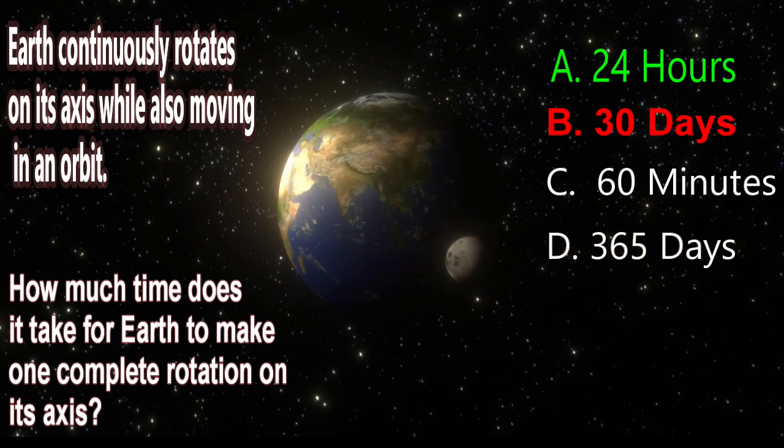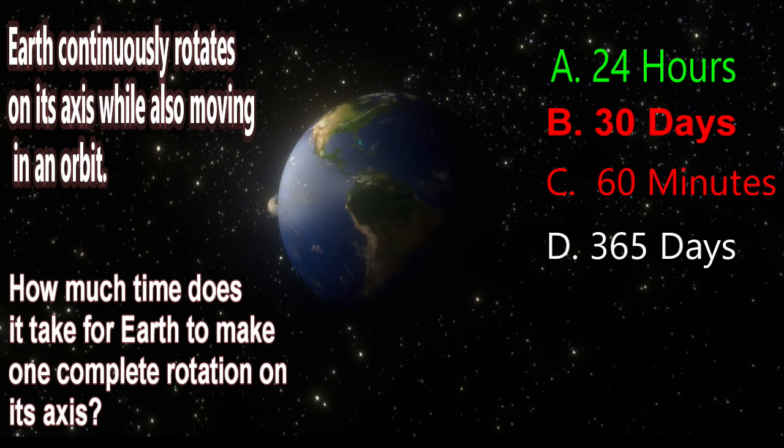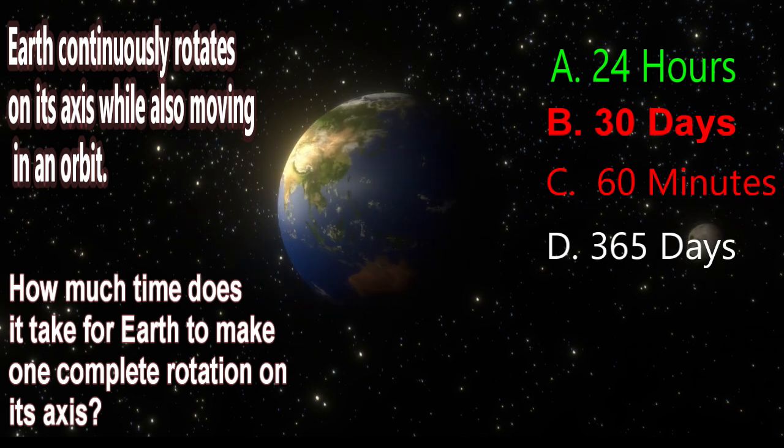C. 60 minutes or one hour is much too short. Earth takes 24 hours to rotate fully, not just one hour.